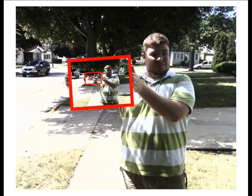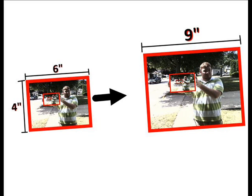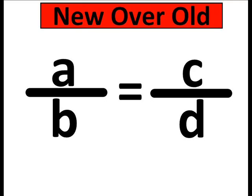I've got a photograph that I want to enlarge. Right now the width is 6 inches, I want it to be 9. So if the length is 4, then what will it become? Let's make two ratios and solve our proportion.